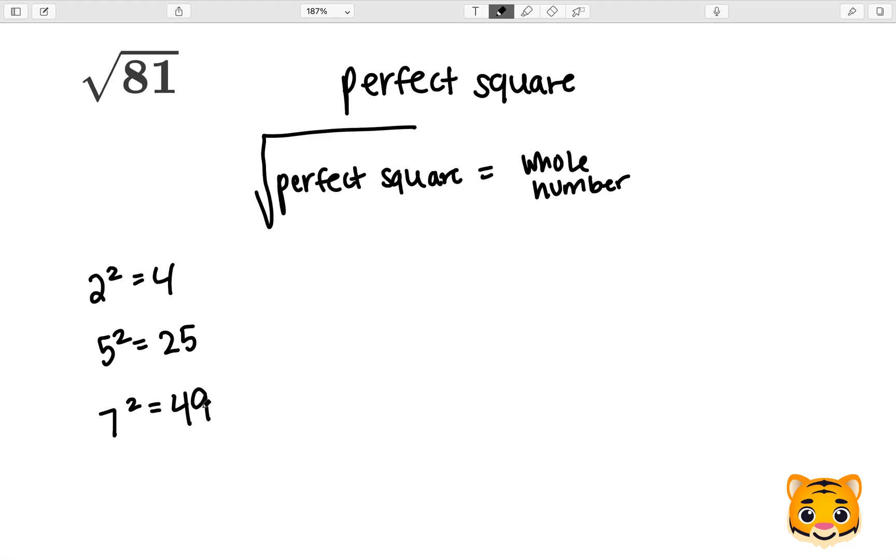In order to find the square root of 81, we want to think about what number times itself gives us 81. We can use 9 times 9 to give us 81, so we can see that 9 squared gives us 81.